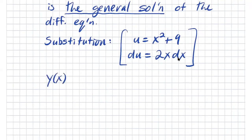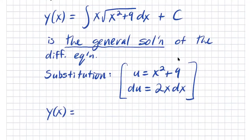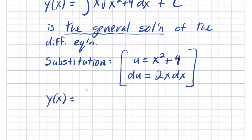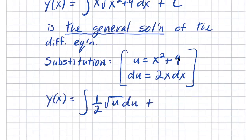Plugging this into the integral, we get y of x equals the integral of: the square root of x squared plus 9 is just square root of u, and x dx is one-half du. So we get one-half times the integral of the square root of u du, plus C.